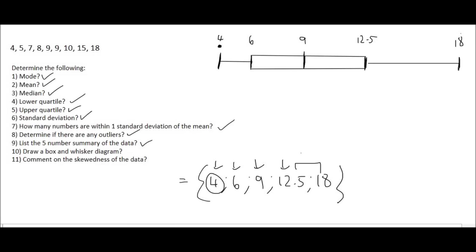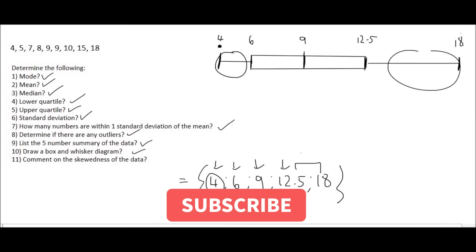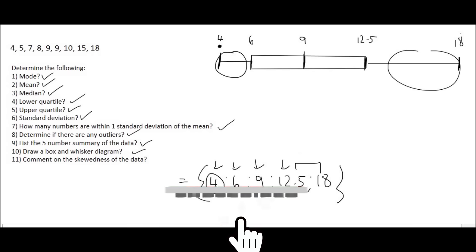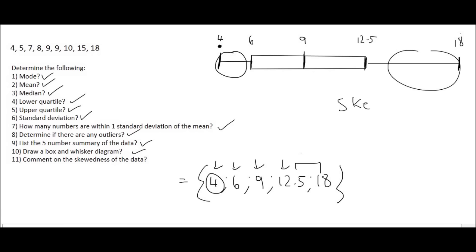The last question asks us to comment on the skewedness. Skewedness can be tricky — all you need to look at is the two tails, which are the whiskers (the box is the central part and the whiskers are the two parts on the side). The whisker is longer on the right-hand side, so we say the data is skewed to the right.